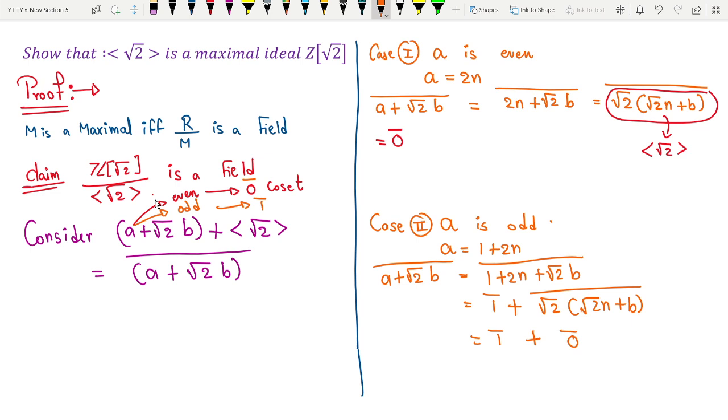So what we are ultimately getting: a can have two choices, it could be either even or odd. We have covered all possible cases, and from all possible cases we observe that z root 2 mod the ideal generated by root 2 is isomorphic to z2, which is a field. Hence our quotient becomes a field, and hence the corresponding ideal becomes a maximal ideal.